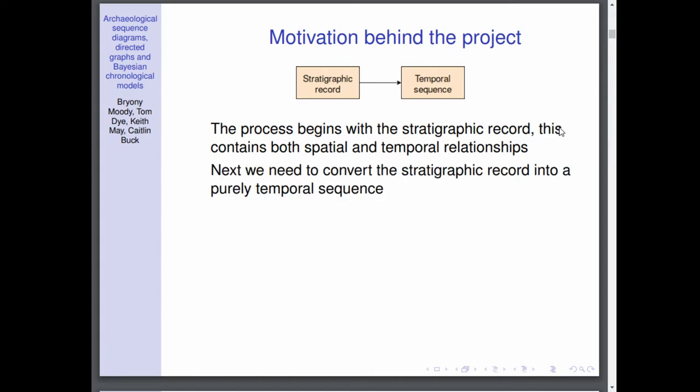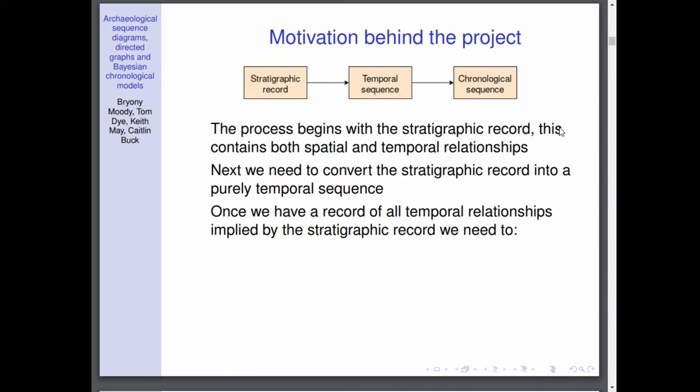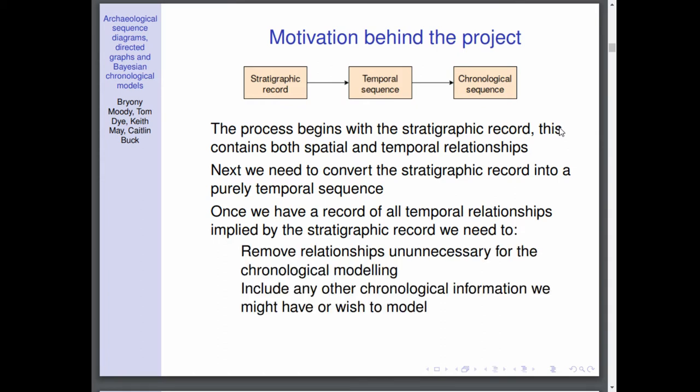From this we need to convert this to a temporal sequence. For once we've got all the temporal relationships, that's not quite the end, then we want the chronological sequence. The reason why this extra step is needed is because there might be unnecessary temporal information that we can get rid of, and then we might want to include any other chronological information like historical dating and phasing.